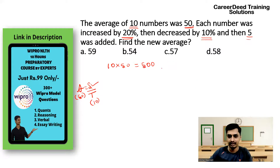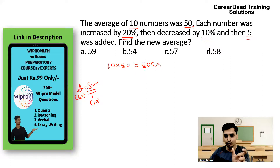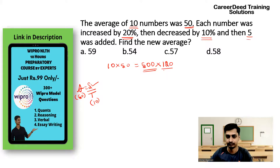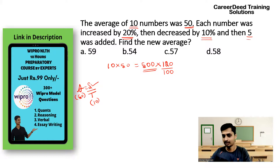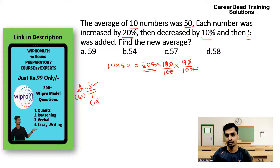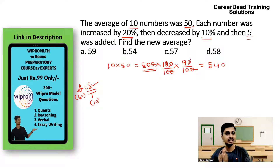So the sum is 500. If you increase by 20%, multiply by 120/100. Then decrease by 10%, multiply by 90/100. So 500 × (120/100) × (90/100) = 500 × 12/10 × 9/10 = 5 × 12 × 9 = 540. So 540 is the new sum after increasing by 20% and decreasing by 10%.